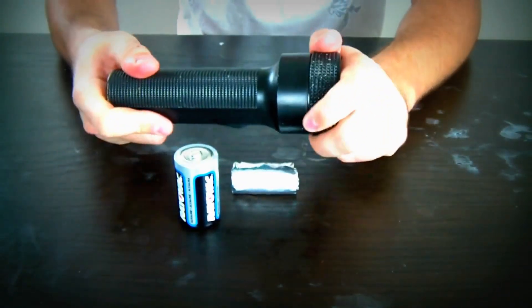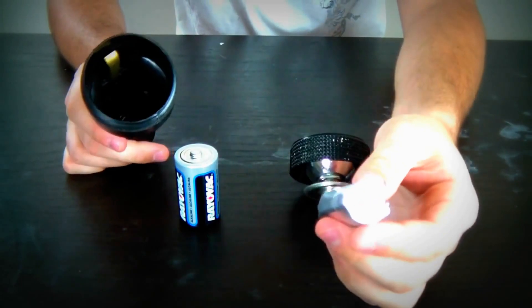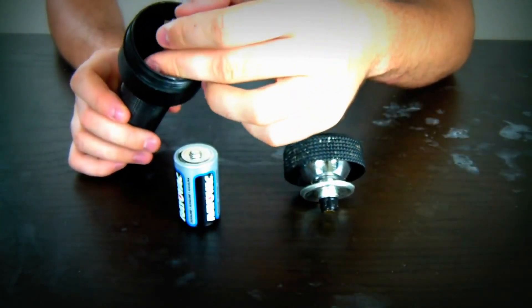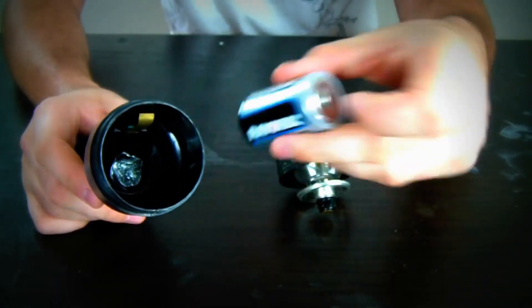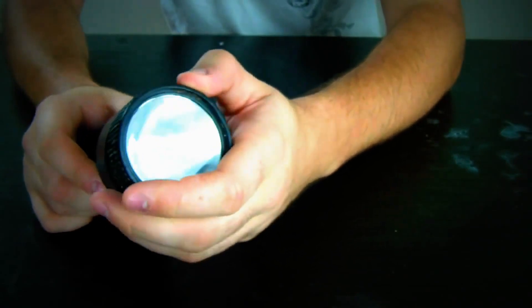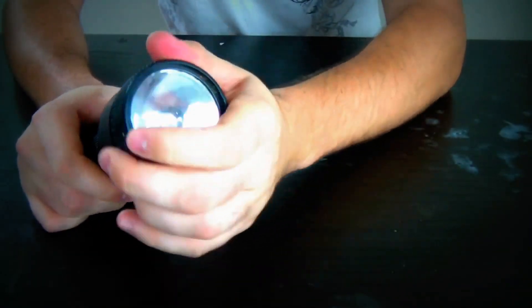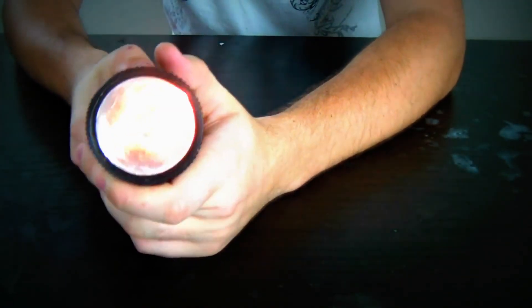We're going to get our flashlight, unscrew it, and then drop aluminum foil first. Drop it in there. You see how it is in there. Then drop the battery in there and screw the flashlight back on. As you can see, it works just with one battery.